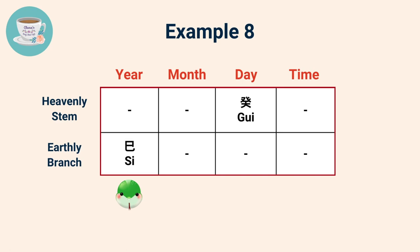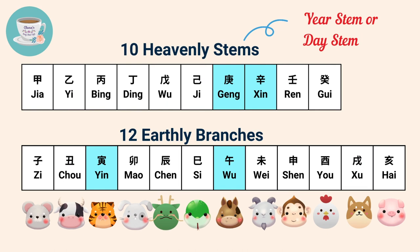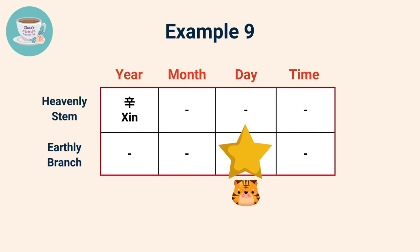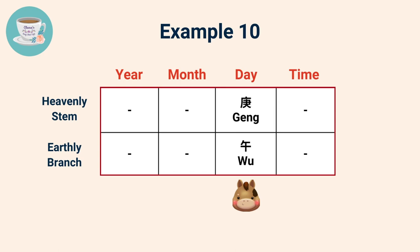If your year stem or day stem belongs to Geng or Xin, then your Nobleman stars are Yin and Wu. Here's an example: the year stem is Xin and the earthly branch is Yin, so Yin — the tiger — is your Nobleman star. If your day stem is Geng, then the horse in the earthly branch is your Nobleman star.